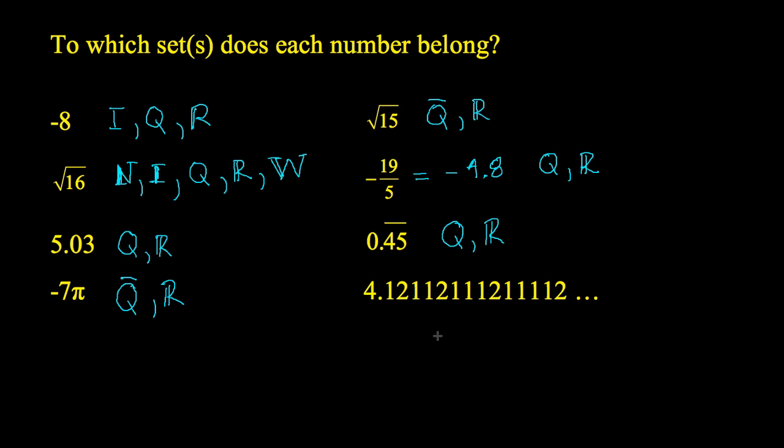And finally, 4.121121112, 1, 1, 2, 1, 1, 2, 1, 1, 1, 1, 2. It looks like we're getting a string of 1s that are increasing in their repetition. We can't divide any two numbers to produce this. This is irrational, but also real.